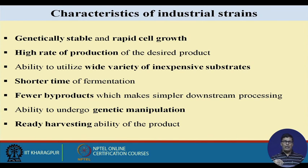Industrial strains give fewer byproducts, which is most desirable. The ability to undergo genetic manipulation is required to achieve desired changes in the organism, increasing productivity, product concentration, and obtaining desired products. Ready harvesting is also important — bacteria are very tiny particles, with sizes varying from 0.5 to 2 microns, so separation is a challenge and harvesting speed matters.